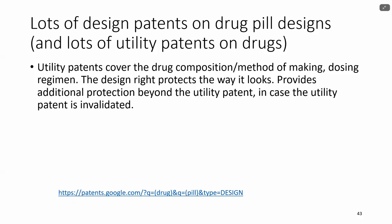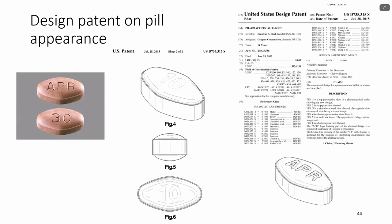There are surprisingly lots of design patents on drugs — drug pills. Utility patents cover the drug composition, the method of making the drug, the method of using it, and the dosing regimen. The design right protects the way it looks, giving additional protection beyond the utility patent. Here's an example of a design patent — the ornamental design for a pharmaceutical tablet, as shown and described. All that they are claiming is the way it looks, nothing about the way it works.